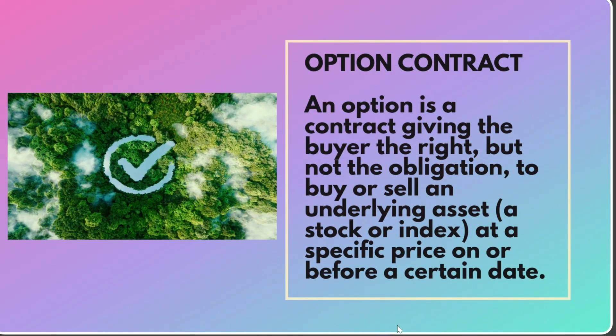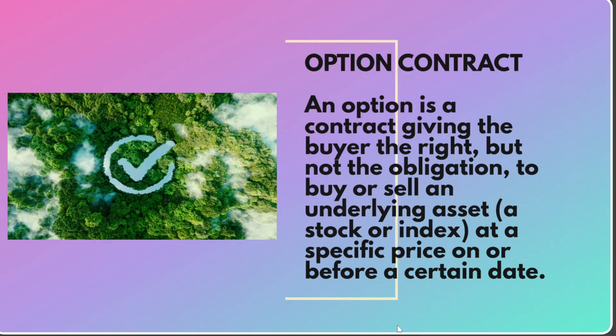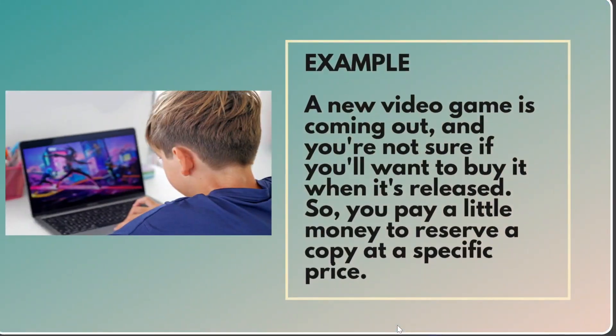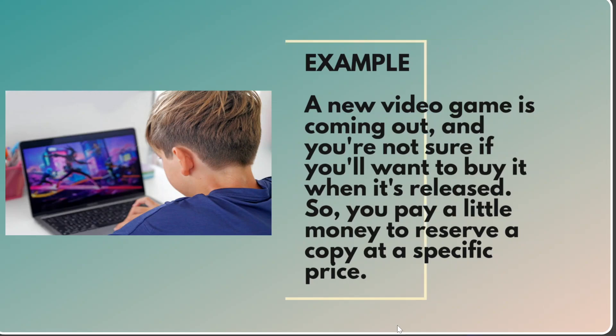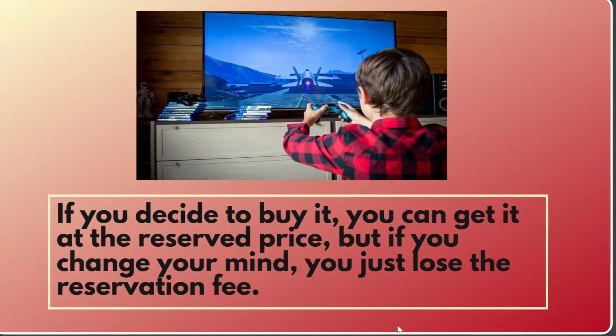An option is a contract giving the buyer the right, but not the obligation, to buy or sell an underlying asset — a stock or index — at a specific price on or before a certain date. For example, a new video game is coming out, and you're not sure if you'll want to buy it when it's released. So you pay a little money to reserve a copy at a specific price. If you decide to buy it, you can get it at the reserve price, but if you change your mind, you just lose the reservation fee.